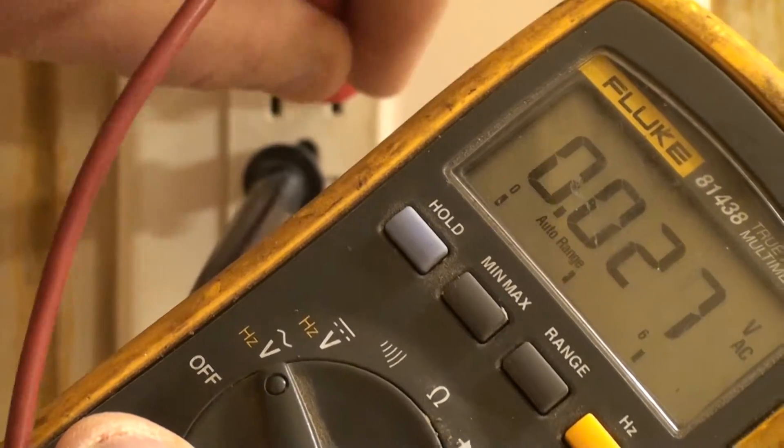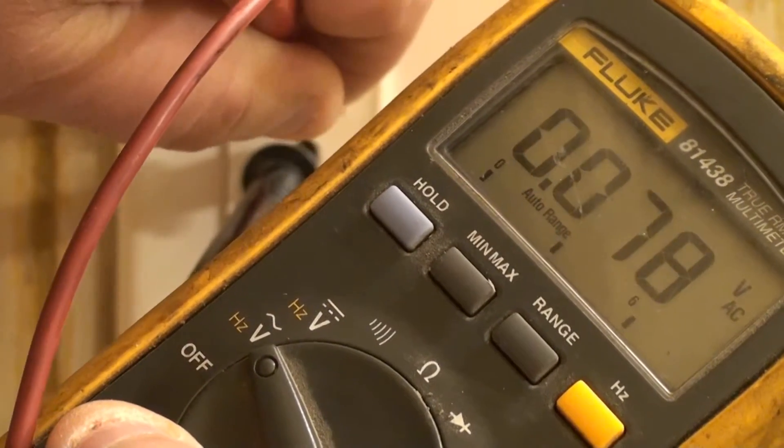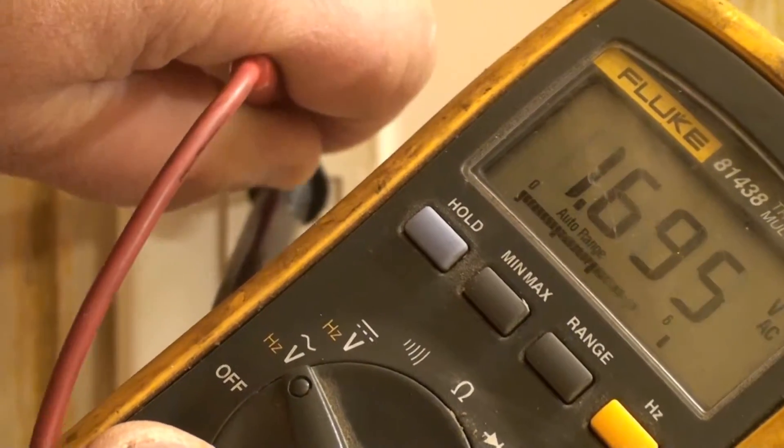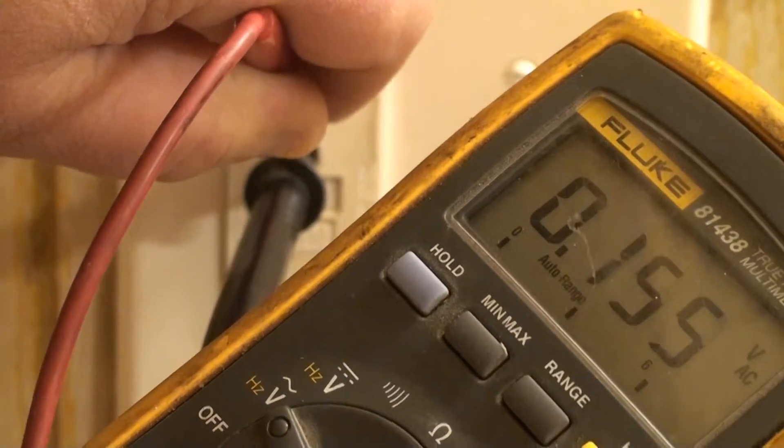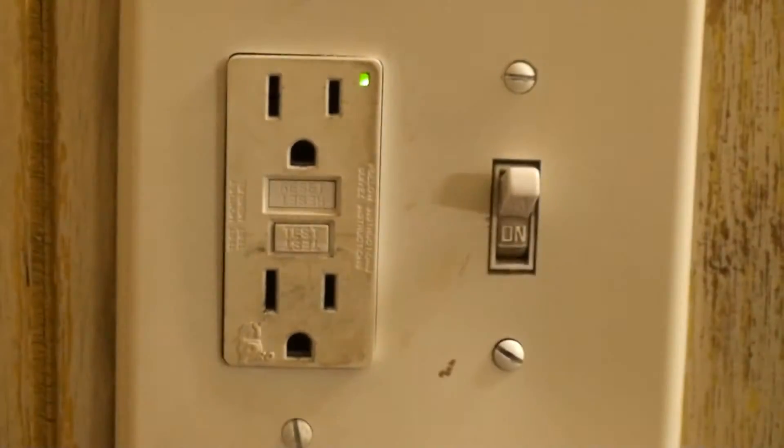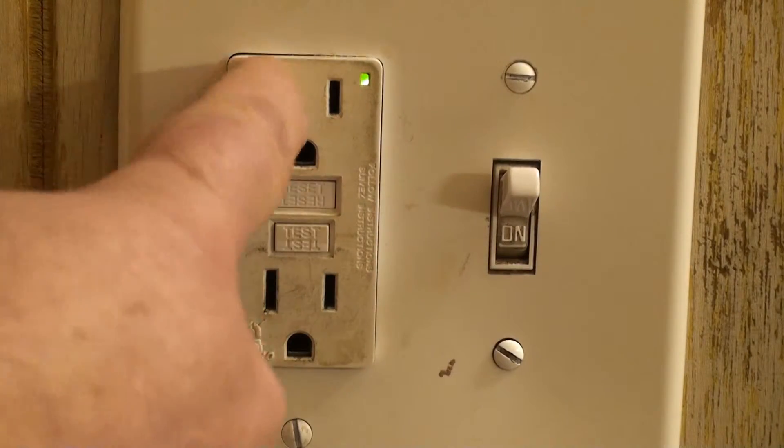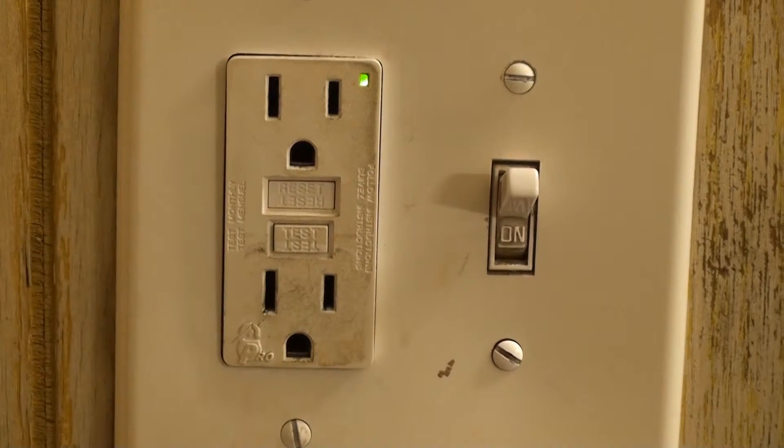Alright, so you know, we're less than a volt there. But on the ground side, come on. Oh there we go. It's kind of hard doing this one hand and trying to keep it in camera view. But this one's hooked up backwards. Between your ground or neutral and your hot.